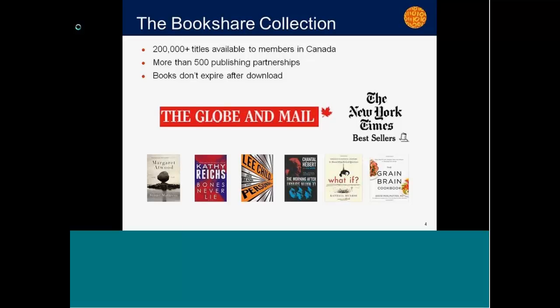We turn them into accessible books available in accessible format the same day as on Amazon. Another difference from OverDrive, for example, is that Bookshare books don't expire. Members who qualify can download their own books — they're watermarked with the member's name and never expire, so the member doesn't have to return them to the library. I just went through the Globe and Mail bestseller list a couple of days ago and we have most of them already in our library.